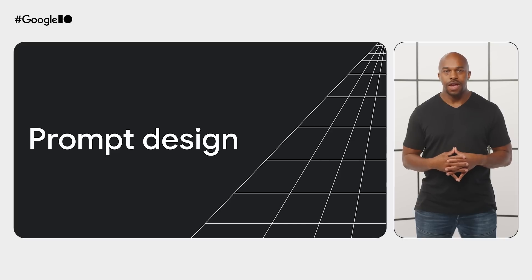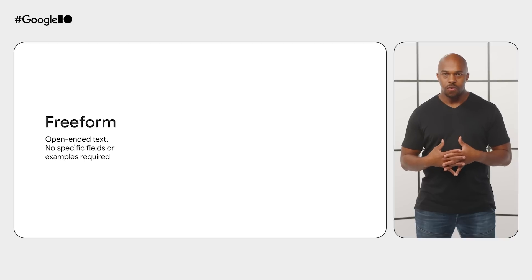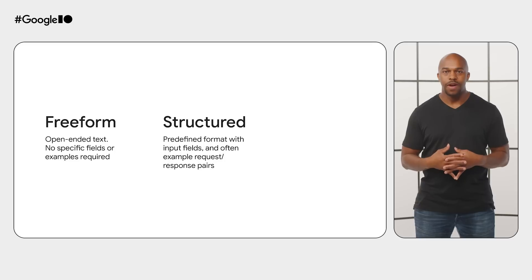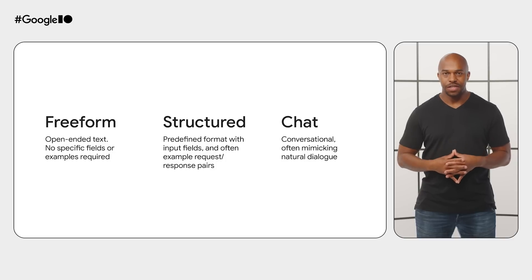The first decision I had to make is what type of prompt would fit our use case: freeform, which is open-ended text; structured, which has a predefined format and often where you provide examples of requests and responses; or chat, which enables a user to have a natural, ongoing conversation with a language model.